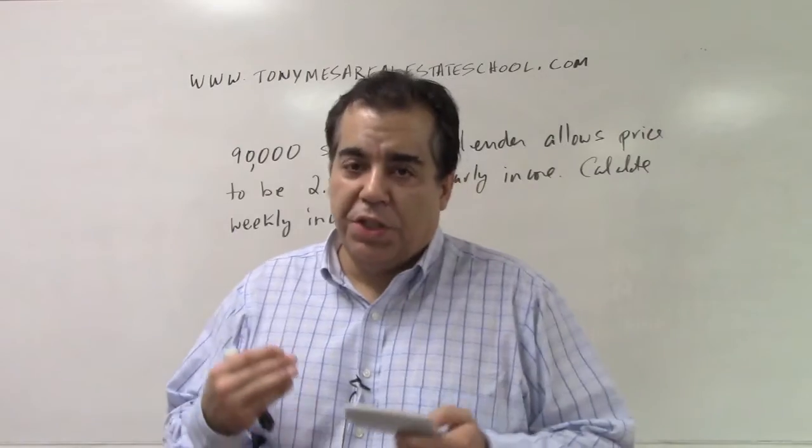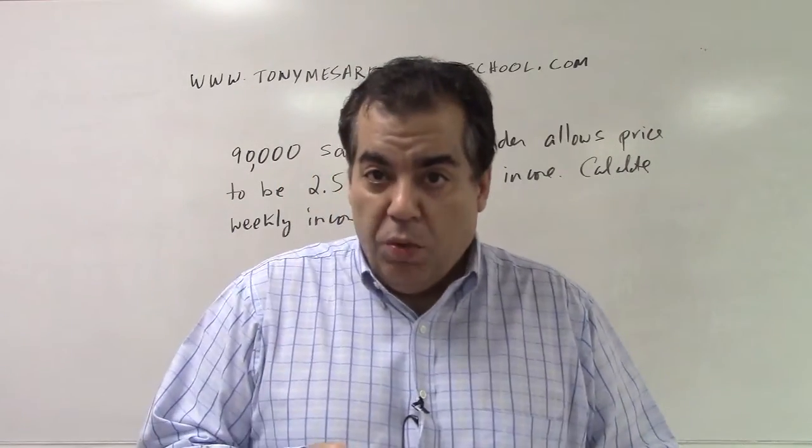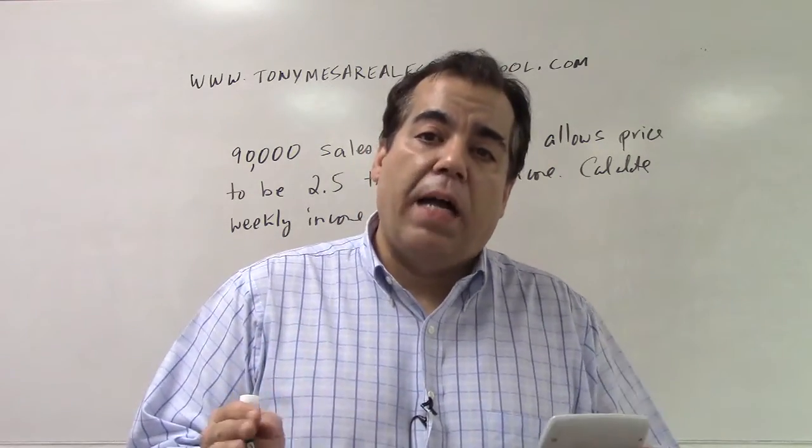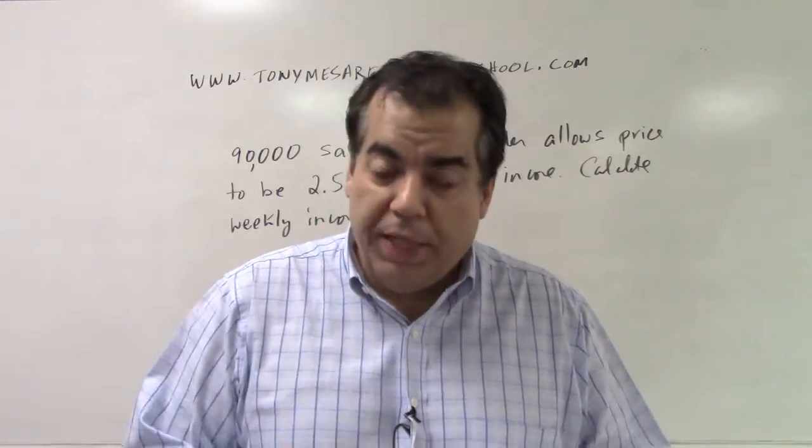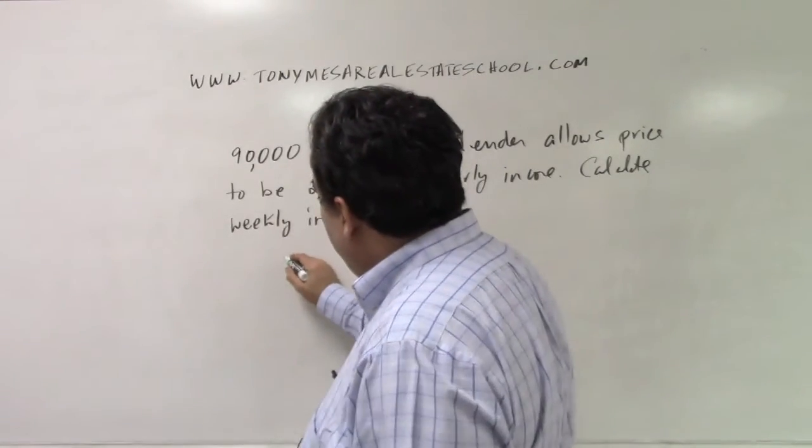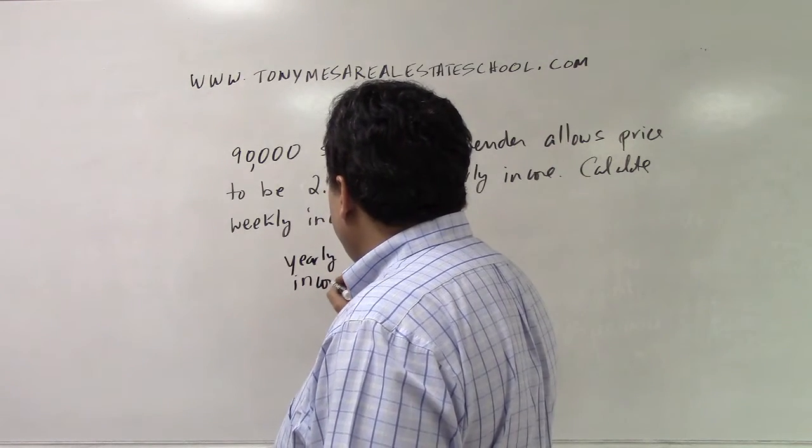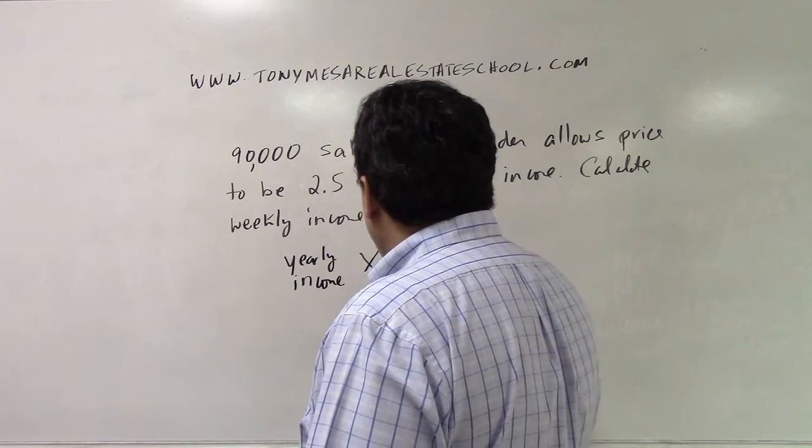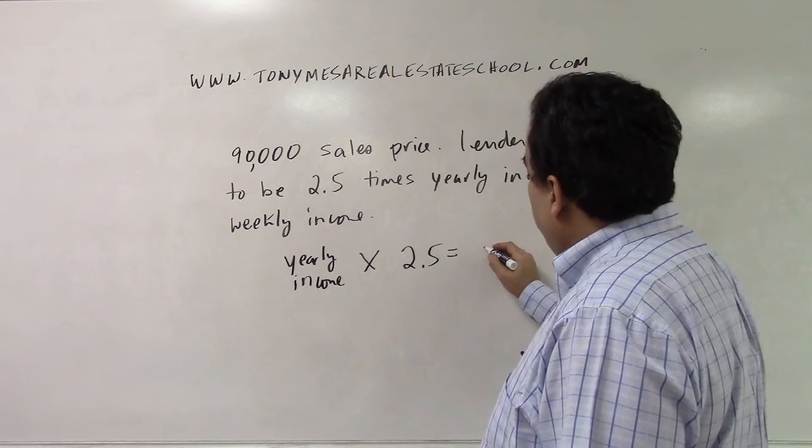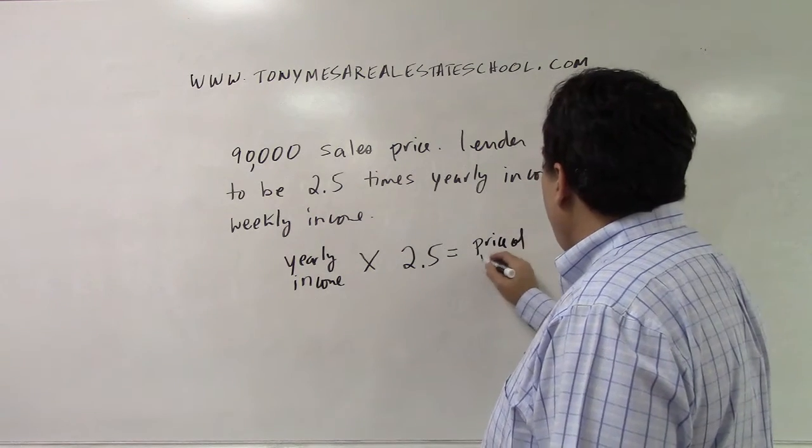So what's the lender telling you here? The lender is telling you that they will let you buy a property, that sales price at most can be 2.5 times what you make per year. So here's what happens. Your yearly income, whatever that is, we don't know that yet, times 2.5 is going to give you the price of the home.